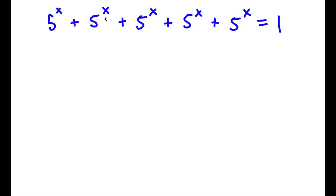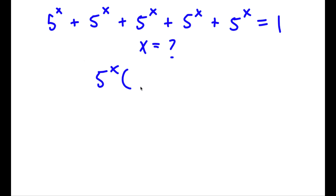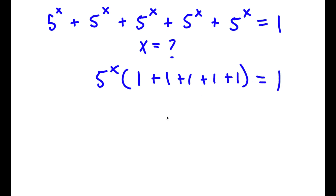So I have 5 to the power of x plus 5 to the power of x plus 5 to the power of x plus 5 to the power of x plus 5 to the power of x is equal to 1, and I want to find the value of x. The first thing I'm going to do is factor out 5 to the power of x from the left-hand side. So 5 to the power of x divided by 5 to the power of x is 1, so now I have 1 plus 1 plus 1 plus 1 plus 1, and this is equal to 1. Simplifying what's in the parentheses, 5 to the power of x times 5 is equal to 1.